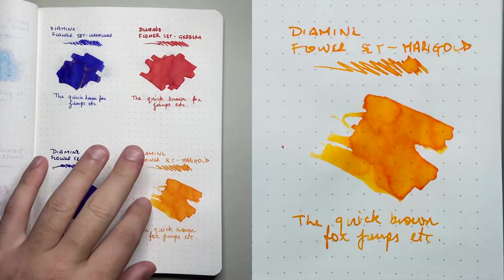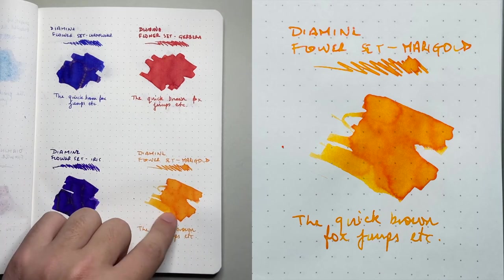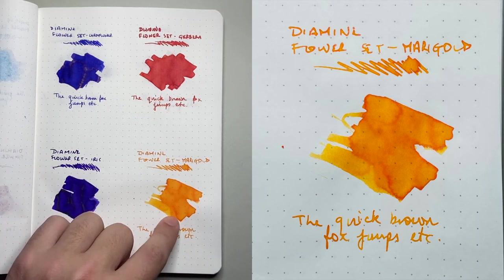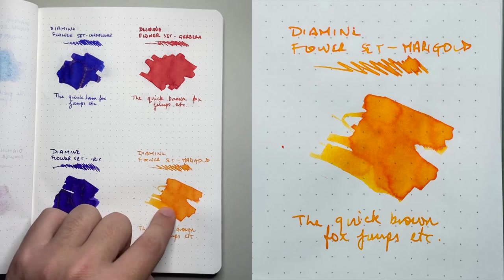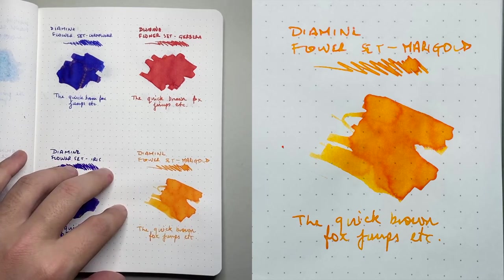Marigold, which is yellow orange, beautiful shading. Not a depth of shading like, say, Robert Oster Peach or Noodler's Apache Sunset or something like that, but does shade from a nice yellow through to sort of quite a warm orange color.